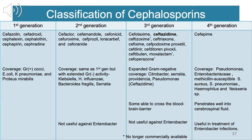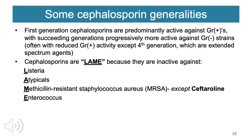Cephalosporins were classified into generations because of their increasing or expanding coverage against gram-negative organisms. First-generation cephalosporins are predominantly active against gram-positive, with succeeding generations progressively more active against gram-negative — often with reduced gram-positive activity — except for 4th generation with its broad extended spectrum. Cephalosporins are described as LAME because they are inactive against Listeria, Atypicals, MRSA (except ceftaroline), and Enterococcus.